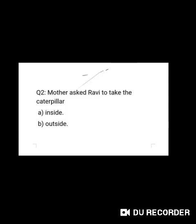Now let us move to question number two. Mother asked Ravi to take the caterpillar — A. inside, B. outside. Good, Gwinkans. It is B. outside.